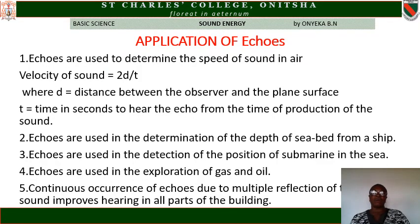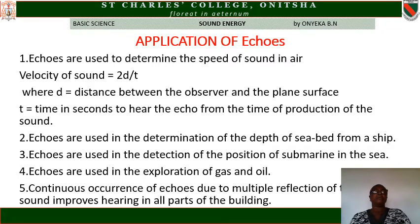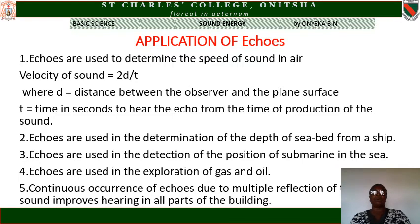Applications of echo: echoes are used in different ways. One, echoes are used to determine the speed of sound in air — the speed of sound can be calculated using the formula: velocity of sound equals 2D over T, where D is the distance between the observer and the plane surface, and T is the time in seconds to hear the echo from the time of production of the sound.